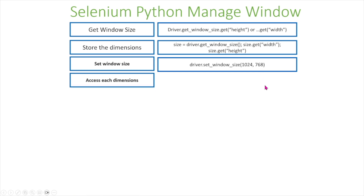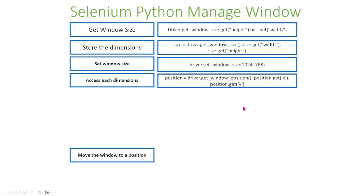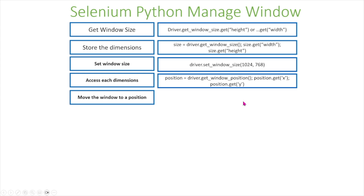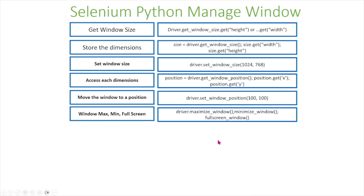You can also access each dimension of the window position. For example, you can store it in a window position variable using driver.get_window_position(), and then you can use position.get('x') and position.get('y') to get the X and Y coordinates of the window. You can also move the window to a specific position on your screen, and you can also use window maximize, minimize, and fullscreen to manipulate your windows.